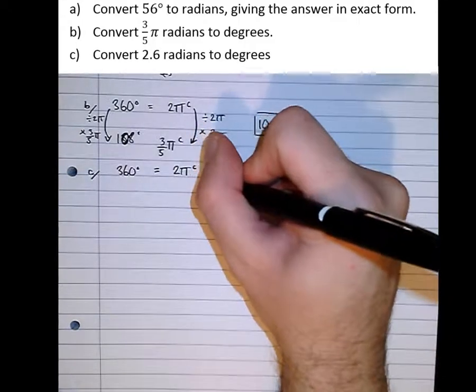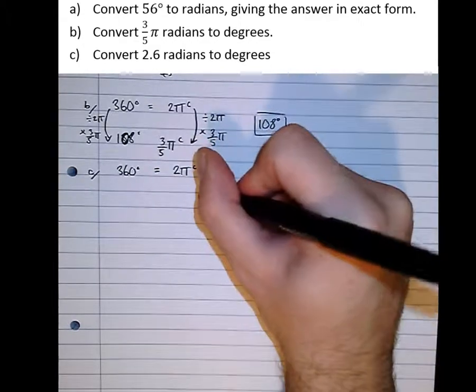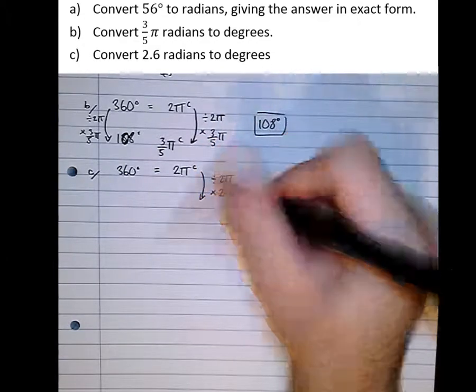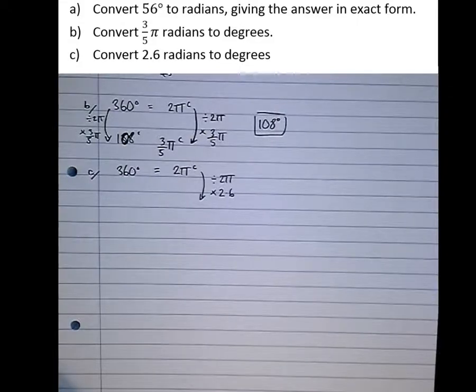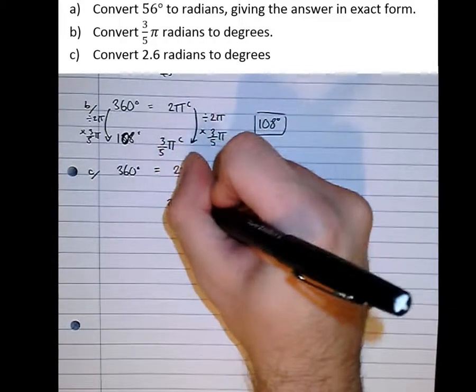And now we want 2.6 radians, so divide by 2π to get 1 radian, but now times by 2.6 to get 2.6 radians. Not 2.6π, there's no π attached to the 2.6 there, so that gives us 2.6 radians.